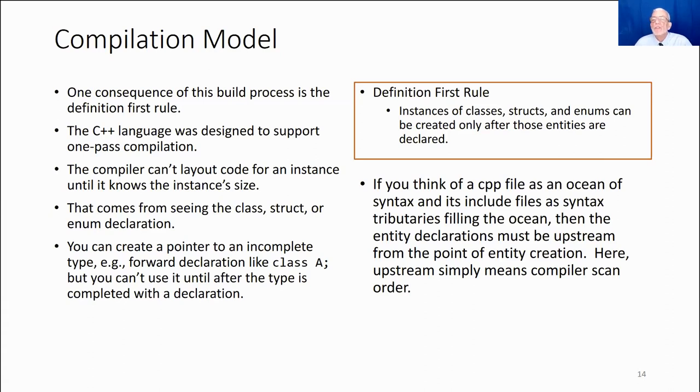So that's the way that works. So the definition first rule says instances of classes, struct synonyms can be created only after those entities are declared. And so, one mental model is if you think of the CPP file as a big collection, an ocean of syntax, and the include files are like tributaries, rivers coming down, filling that ocean, the rivers of syntax, then the entity declarations have to be upstream from the point of an entity creation. We have to have seen that declaration before we can create the instance. So I hear upstream simply means a compiler scan order.